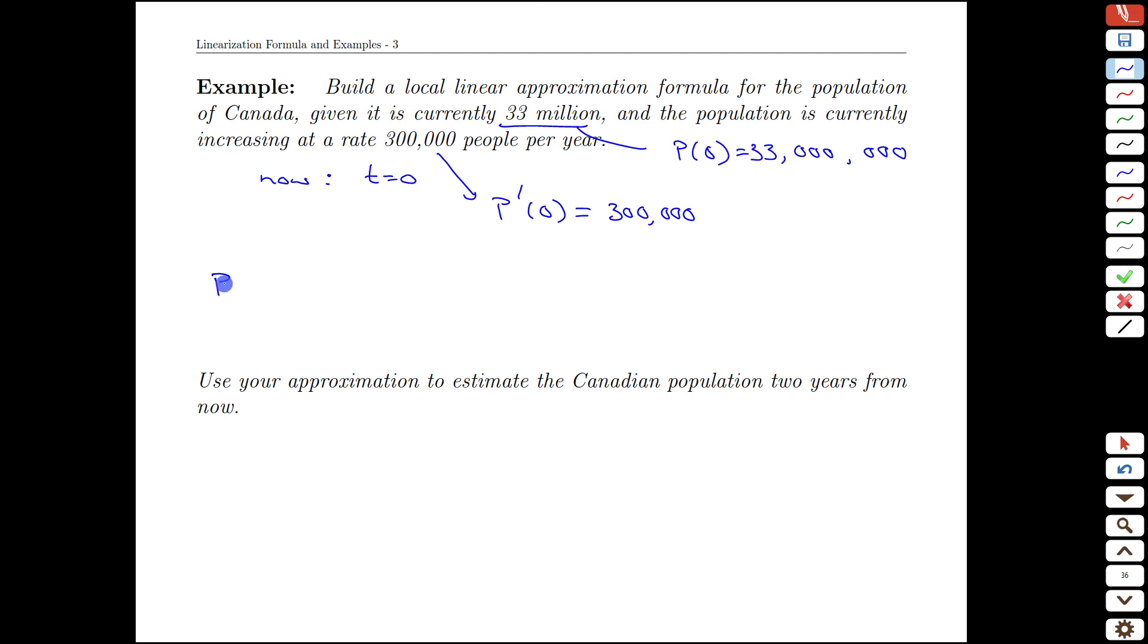And so what we'd get is the population at any time, t years in the future, or years from now, will be equal to, well, we're gaining 300,000 based on how many years away from today. That's going to be our change in population, but we start currently at 33 million.